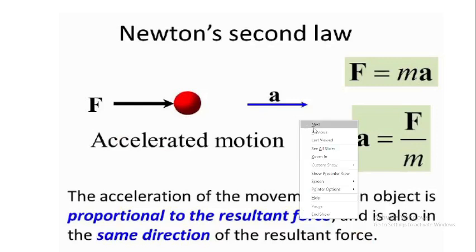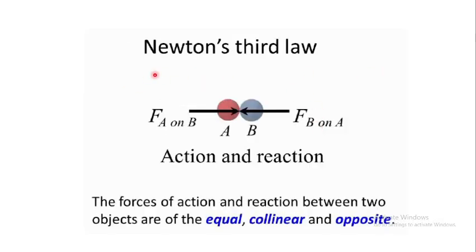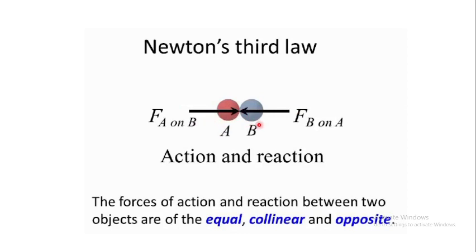Newton's third law is an action and reaction law. The forces of action and reaction between two objects are equal, collinear, and opposite. If we have force A acting on body B, and force B acting on A, then force A applies an action on B and the reaction is given by force B. These two forces are equal, collinear — acting on the same line — and opposite in sense to each other.